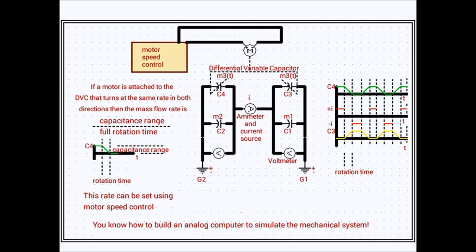And this motor is connected to a motor speed control circuit. And the purpose of the motor speed control circuit is to control the rate at which the differential variable capacitor shaft is rotated.